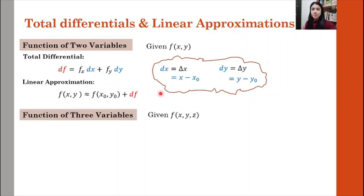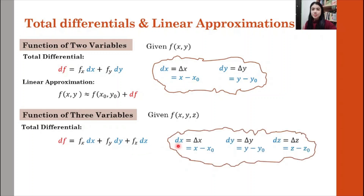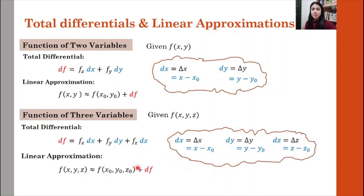Now let's look at the function of three variables. So we have a function f(x, y, z). The total differential formula will be df equal to fx dx plus fy dy plus fz dz. We let dx equal to the increment of x, dy equal to the increment of y, and dz equal to the increment of z. The linear approximation will be f(x, y, z) approximately equal to f(x₀, y₀, z₀) plus df.